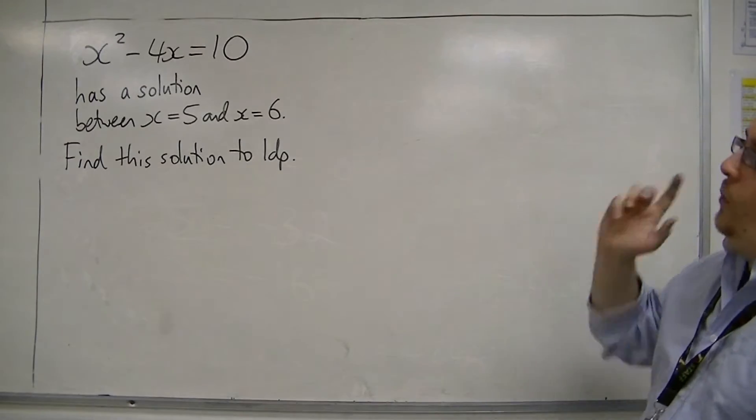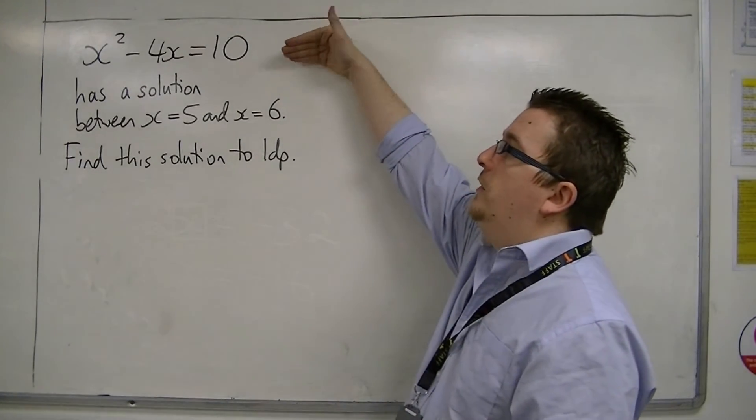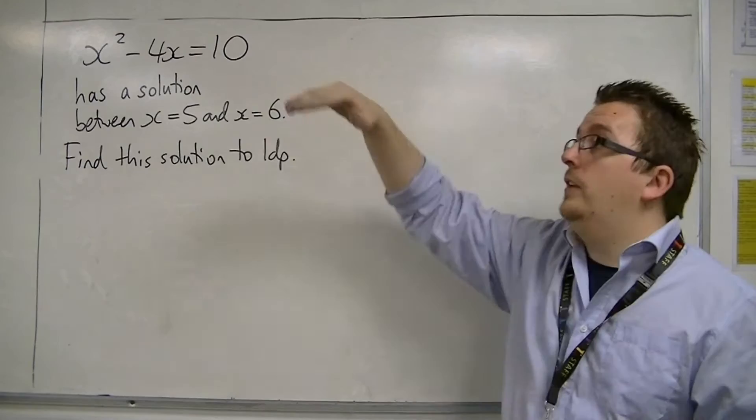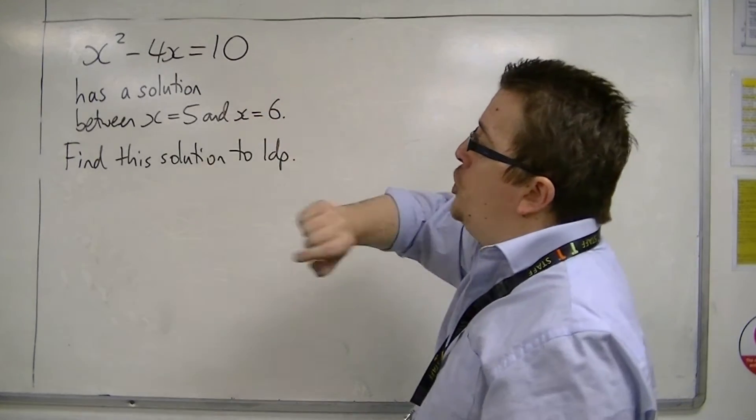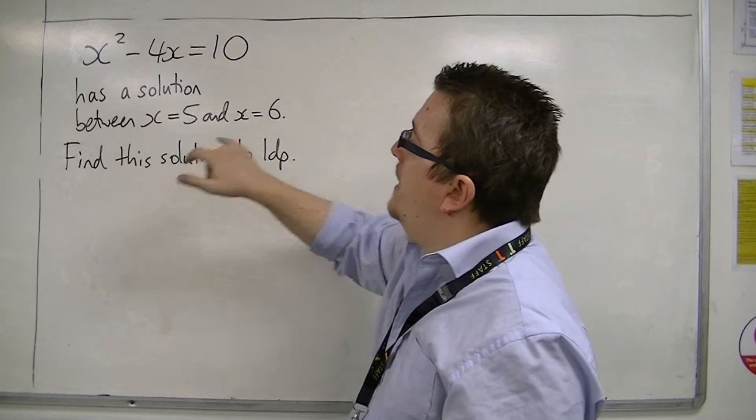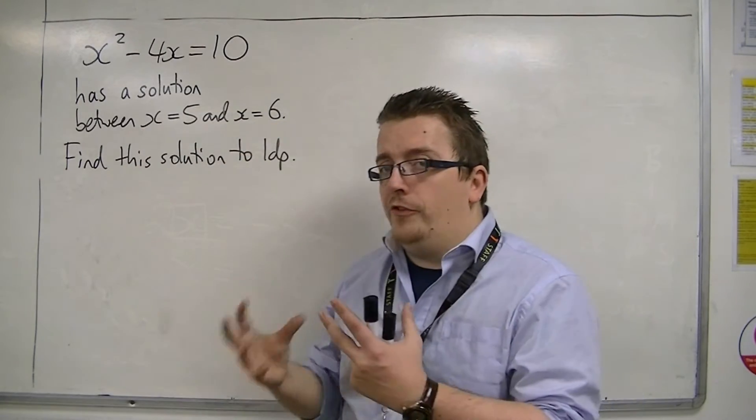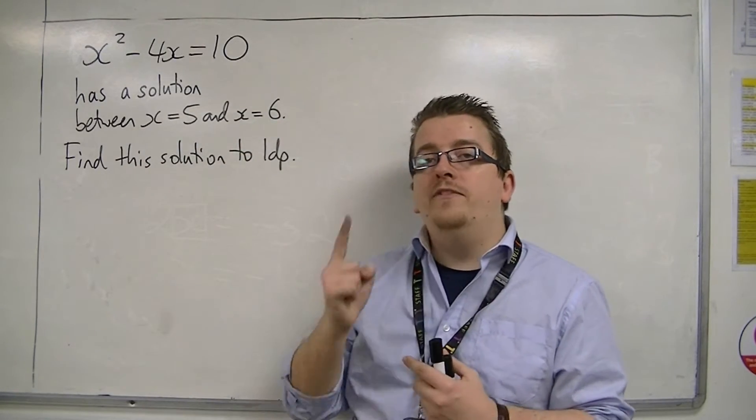So the equation that I want to solve is x squared minus 4x equals 10. And as I say, we don't know how to solve this one yet. But we are told that there is a solution between x is 5 and x is 6, and we want to find this solution to one decimal place.